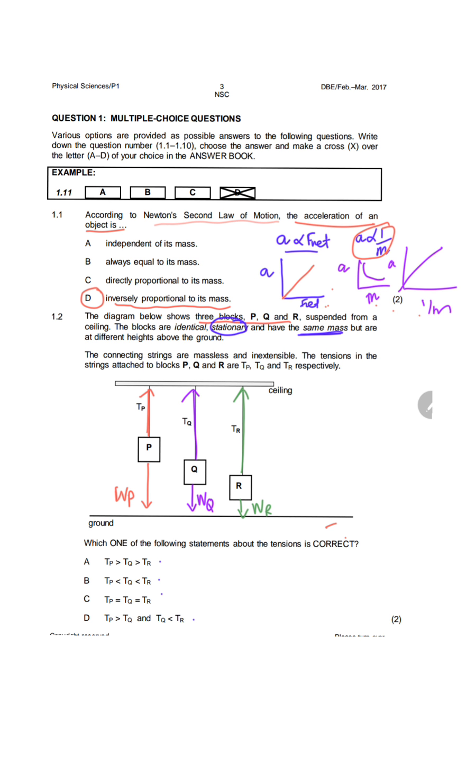We can see by looking at this diagram that the distance above the ground is different. But because they told us that all of them have the same mass, that would mean they all have the same weight. Because weight, or Fg, is equal to mg. The second important piece of information is that the blocks are stationary and suspended from a ceiling. According to Newton's first law, the net force acting on all these objects is zero.